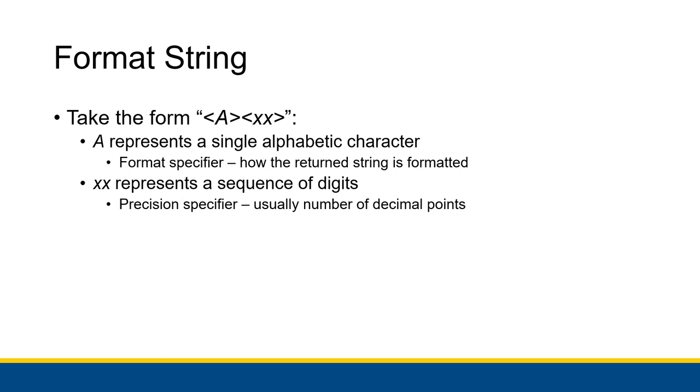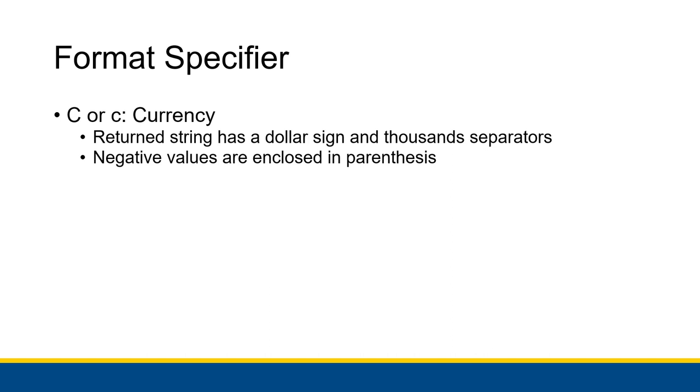Let's look at a couple examples. One possible format specifier is the letter C, either uppercase or lowercase. The case doesn't actually matter in these format specifiers, at least the ones we're covering here. The string that gets returned formats the number as currency. It puts a dollar sign in front and uses thousandth separators, commas at every three digits, thousands, millions, billions. Negative values are enclosed in parentheses as well.